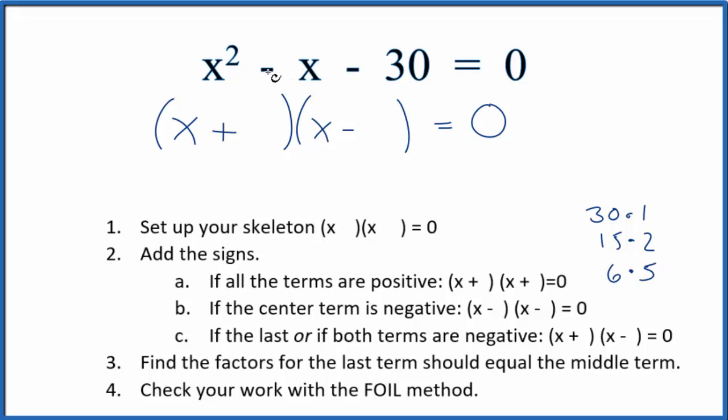And I want them to add up to this negative 1x here. So, it looks like 6 and 5. If I had a negative 6 and a positive 5, that would give me that negative 1. So, I'll put a negative 6 and a positive 5, and these should be the correct numbers for x squared minus x minus 30.